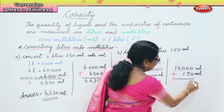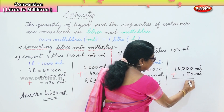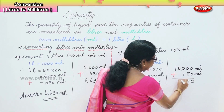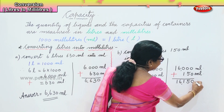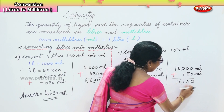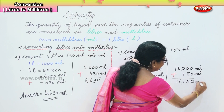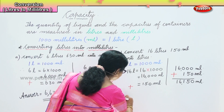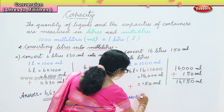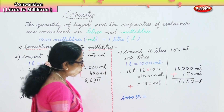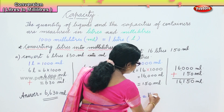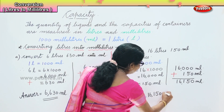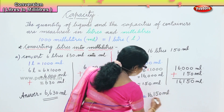Zero plus zero is zero. Zero plus five is five. Zero plus one is one. And then you bring down the six and the one. So we have sixteen thousand one hundred and fifty milliliters, and that is our answer.